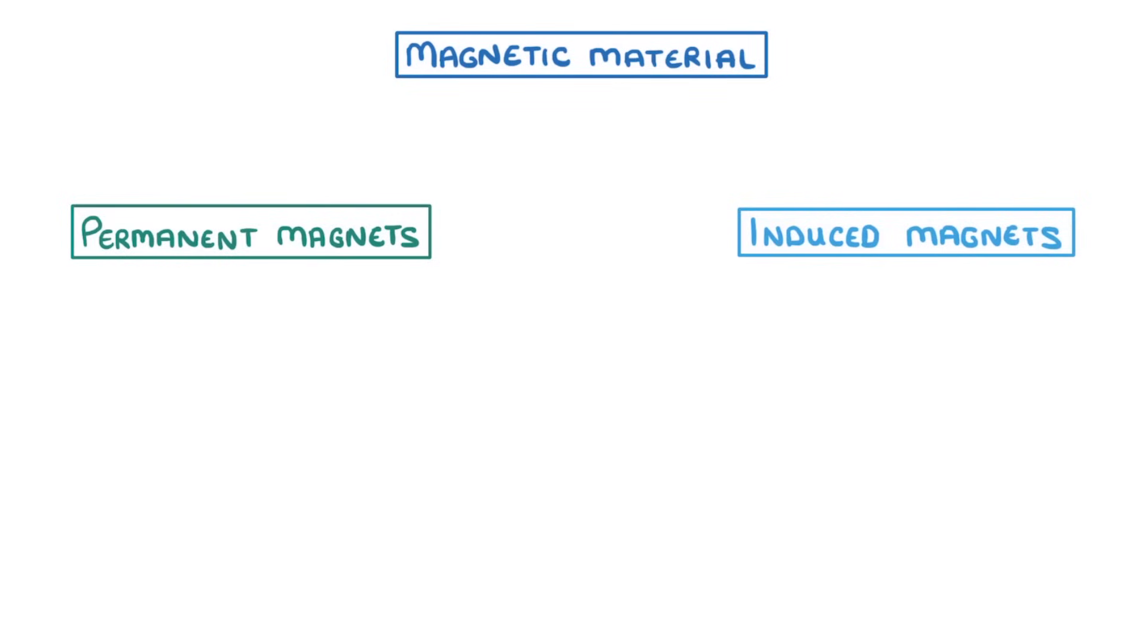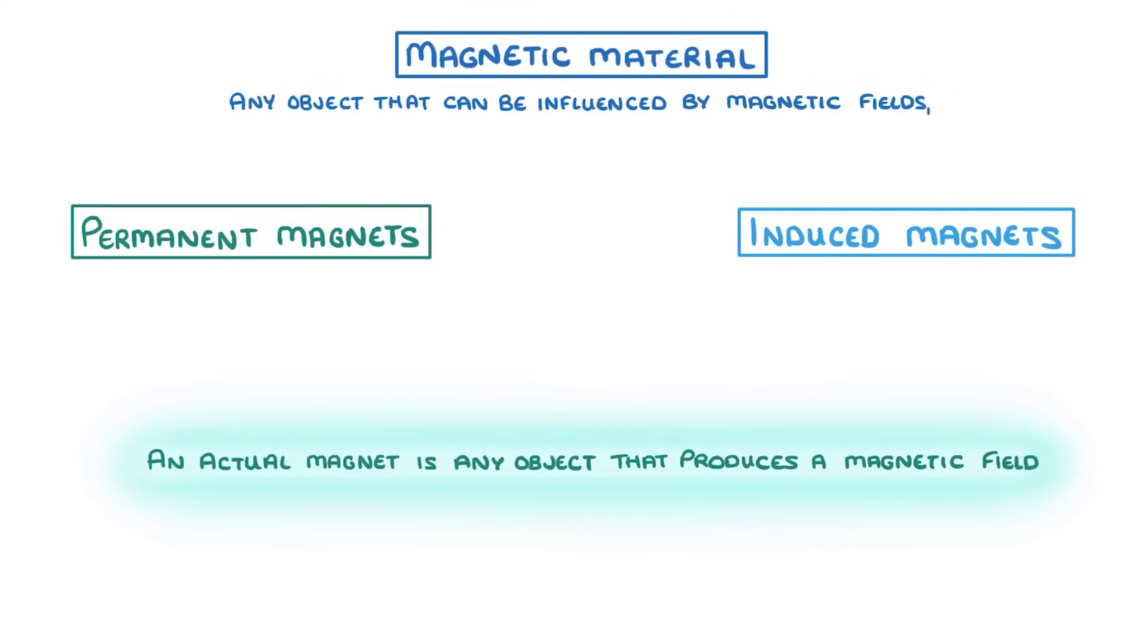Now one of the confusing things about magnetism is that not all magnetic materials are actually magnets. An actual magnet is any object that produces a magnetic field, while a magnetic material is any object that can be influenced by a magnetic field and has the potential to become a magnet.